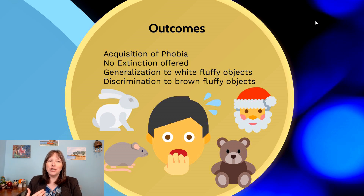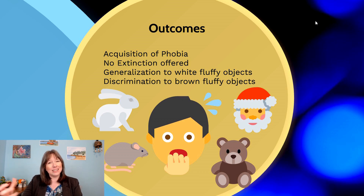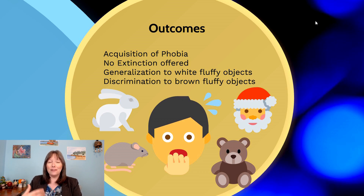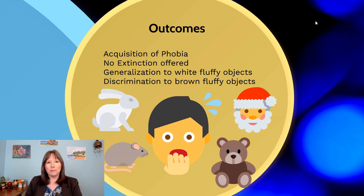The phobia seemed to generalize only to white furry things and not brown furry things. The generalization and discrimination could differ across individuals — if this happened to multiple infants, they might generalize to slightly different stimuli based on their own experiences and what they paid most attention to. This tells us that Albert was paying most attention to the color and furriness of the animal, so color was a big factor in what was generalized and what was discriminated.